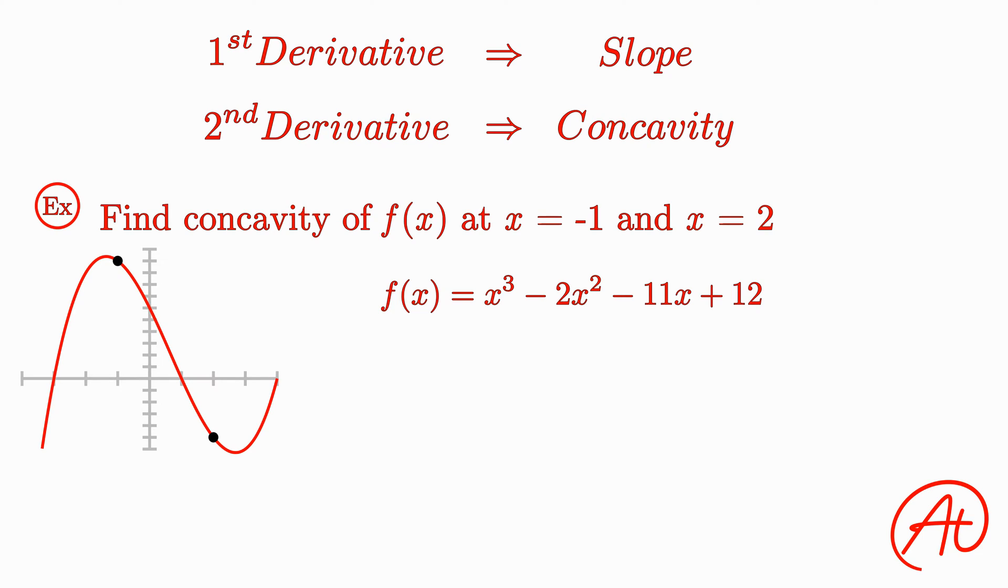To see if we're right, and to answer the question, let's actually do the math. As I mentioned before, in order to find the concavity, we need to find the function's second derivative. Okay, so let's start with the first derivative. Using the power rule, we find that the first derivative is 3x squared minus 4x minus 11.